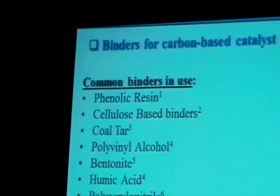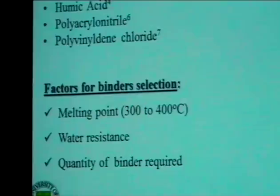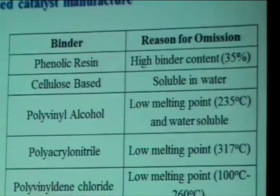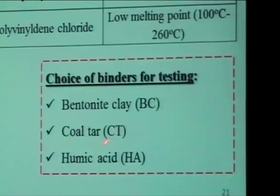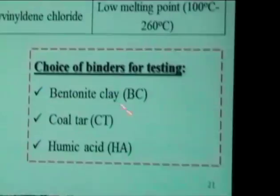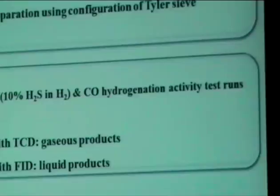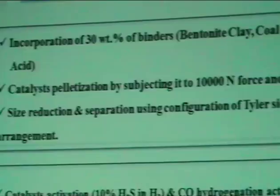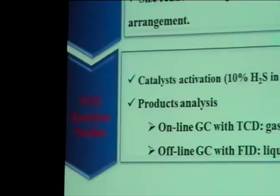Once the catalysts were prepared, we screened binders to make larger pellets suitable for scale-up. Several binders were evaluated, and based on various factors influencing binder properties, three were selected: bentonite clay, coal tar, and humic acid — referred to as B, C, and H in presentations. The catalyst was pelletized with these binders in different sizes, and before testing, it was sulfided using 10% H₂S in hydrogen, then temperature and pressure were maintained in the reactor for the higher alcohol synthesis reaction.